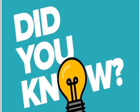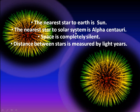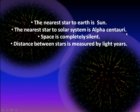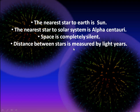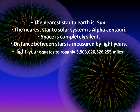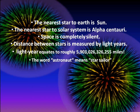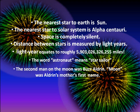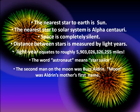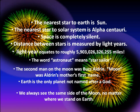Here are a few important facts: The nearest star to the Earth is the sun, and the nearest star to our solar system is Alpha Centauri. Space is completely silent — there is no sound at all. The distance between stars is measured in light years; one light year roughly equals 6 trillion miles. The word 'astronaut' means star sailor. The second man on the moon was Buzz Aldrin. Earth is the only planet not named after a god.